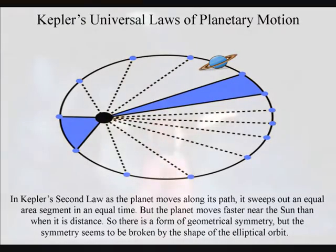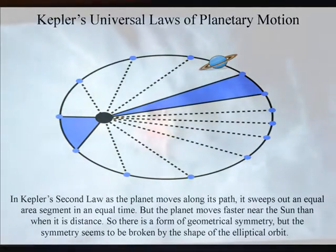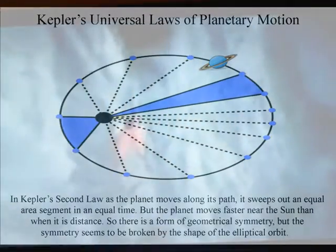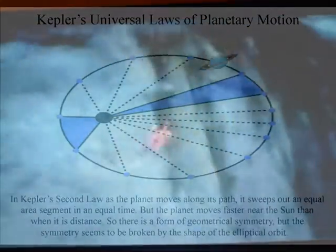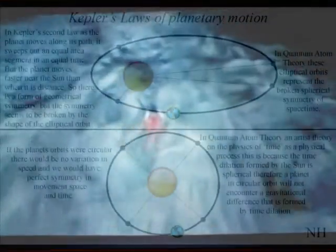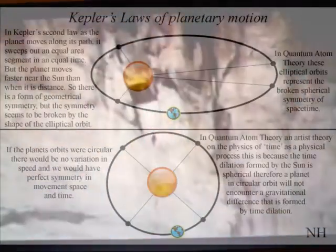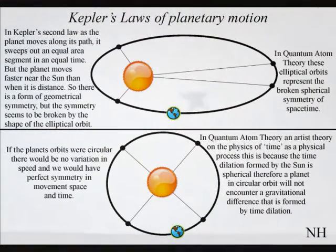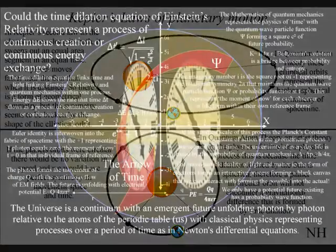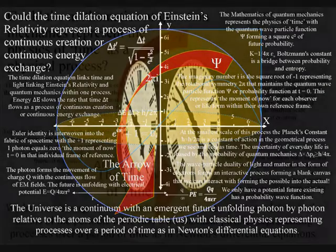In Kepler's second law, as the planet moves along its path it sweeps out an equal area segment in an equal time, but the planet moves faster near the sun than when it is distant. So there is a form of geometrical symmetry, but the symmetry seems to be broken by the shape of the elliptical orbit. The fundamental geometry of this process is spherical, but the planets have broken this symmetry forming elliptical orbits relative to their energy and momentum, with varying speed relative to their distance from the sun. If the planets' orbits were circular there would be no variation in speed and we would have perfect symmetry in movement, space, and time. In this theory this is because the time dilation formed by the sun is spherical, therefore a planet in circular orbit will not encounter a gravitational difference that is formed by a geometrical process relative to time dilation.